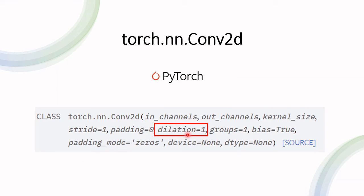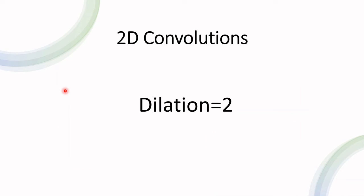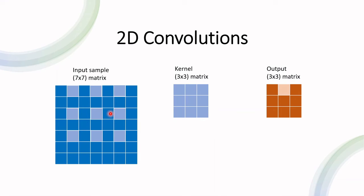The next parameter is dilation, which refers to the spacing between the kernel points. The default value is one, meaning the spacing between kernel points is simply one. If we change the dilation to be equal to two, applying the same kernel looks like this — there is a spacing of two between each pair of kernel points. That of course reduces the shape of the output matrix, and for the next stride the kernel shifts by one to the right with that larger spacing.